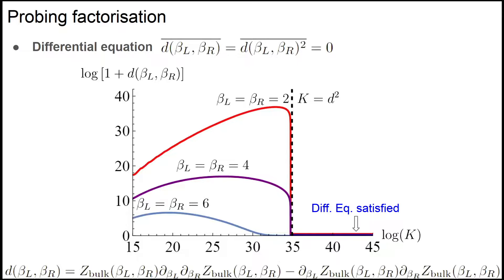For some final comment, although these two numerical plots are only for the leading order e to the 1 over G_Newton correction, we actually have an argument for all orders e to the 1 over G_Newton correction, and the factorization is still true.